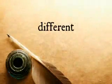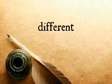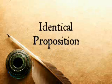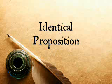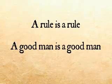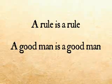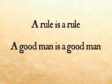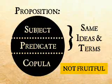Number one: the subject and predicate of a proposition should always be two different ideas or two different terms. When the terms and the ideas are the same, it is called an identical proposition, and it cannot tend to promote knowledge. Some examples of identical propositions would be 'a rule is a rule' or 'a good man is a good man.' That is an unfruitful proposition, because the ideas and the terms are the same thing.